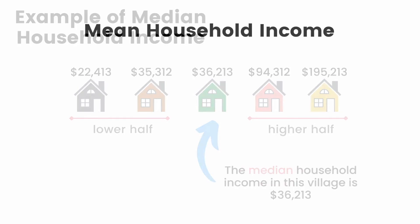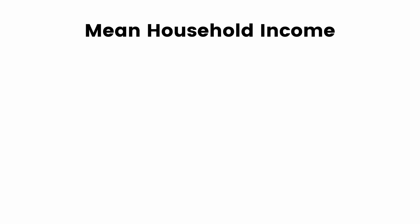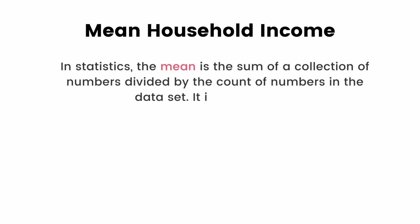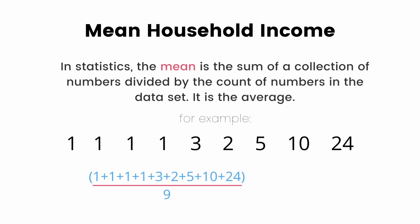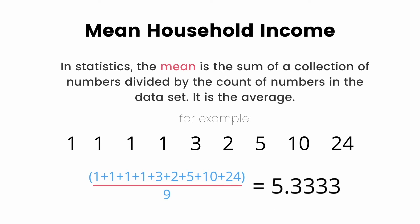Now let's take a look at mean household income. In statistics, the mean is the sum of a collection of numbers divided by the count of numbers in the data set — put simply, it is the average. Let's take the data set from earlier and try to find the mean. We sum the collection of numbers and then divide by the count of numbers in the set, which is 9. For this data set, the mean is 5.3 repeating.